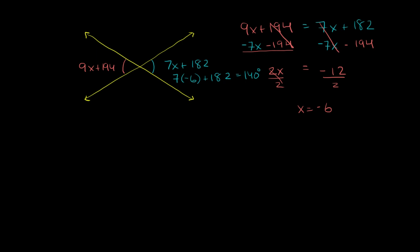And you'll see the same thing over here. If we say 9 times negative 6, which is negative 54 plus 194, this also equals 140 degrees.